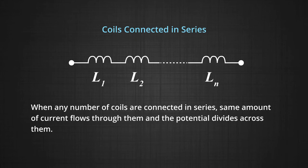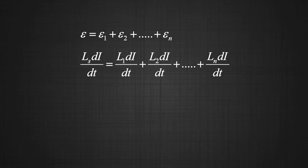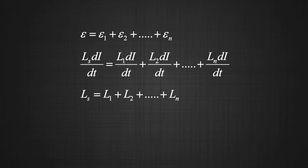For practical purposes, we can combine solenoids in series as well as in parallel. When any number of coils are connected in series, the same amount of current flows through them and the potential divides across them. Mathematically, E equals E1 plus E2 plus E3 and so on till En, which equals Ls times di by dt. Ls di by dt equals L1 di by dt plus L2 di by dt and so on till Ln di by dt. Cancelling di by dt on both sides, we get Ls equals L1 plus L2 and so on till Ln. Therefore, the combined inductance of coils connected in series equals the sum of inductances of individual coils. In series, the total inductance increases.